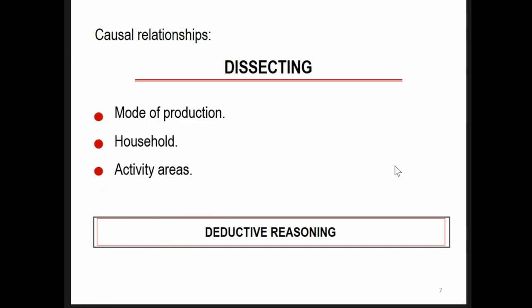This has considered, first, the mode of production that characterized the society under study and its corollaries. Secondly, the household as the analysis unit. In this regard, we understood household as defined by Wilk and Rathje. And lastly, the possible activity areas that can be found within a household, such as production areas, consumption areas, discarding areas, and residential activity areas.